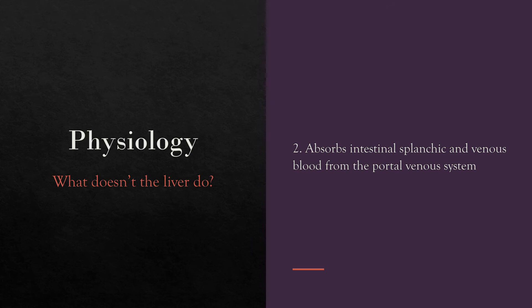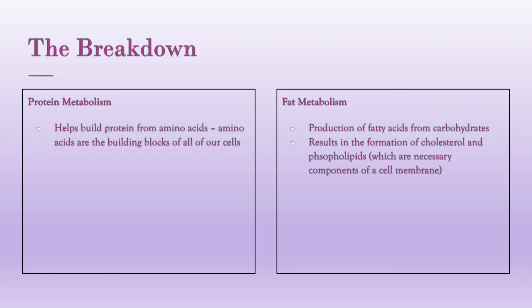The liver has a dual blood supply from the portal venous system and from the hepatic artery. The hepatic artery is a branch off of the celiac axis, which is one of the main branches off the aorta. The celiac axis has three main branches: the splenic artery, the hepatic artery, and the left gastric artery. The hepatic artery further divides into the gastroduodenal artery — which we can see in the anterior part of the pancreatic head — and then the hepatic artery proper, which feeds our liver. The liver also breaks down proteins into amino acids, which are the building blocks of all our cells, and it helps metabolize fat.